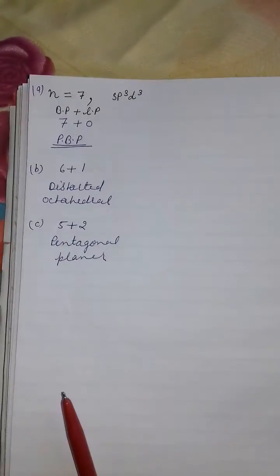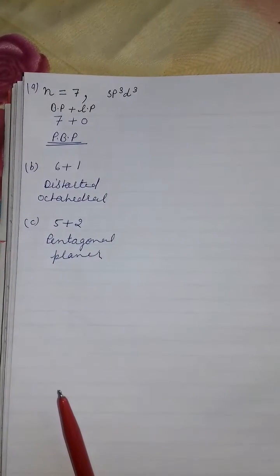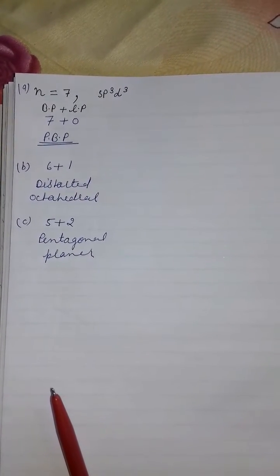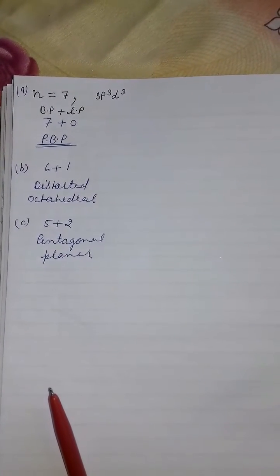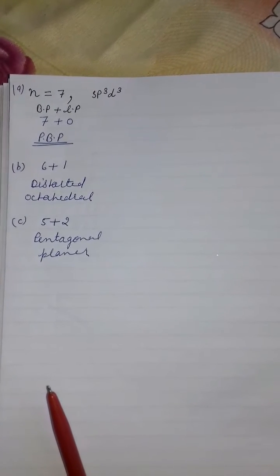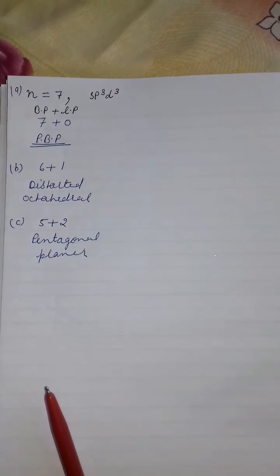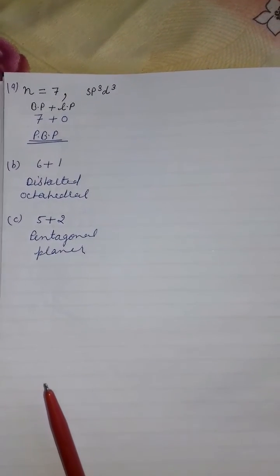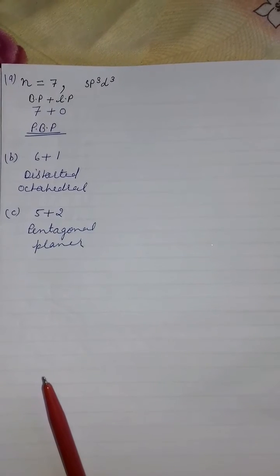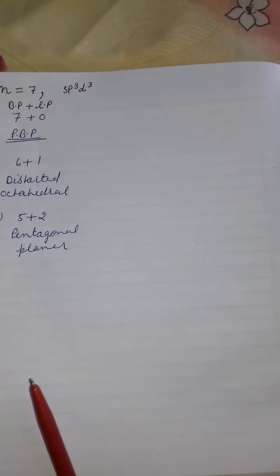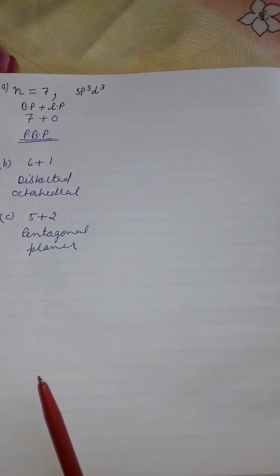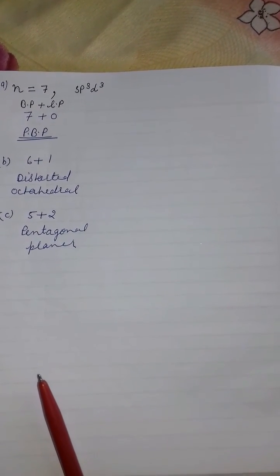From these data we can easily identify the shape of any molecule with the help of lone pairs of electrons. In my next video I will discuss how to find the value of lone pairs — that is, how to identify the number of lone pairs present in a molecule. Thanks for watching, have a nice day.